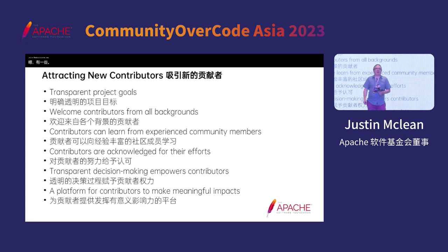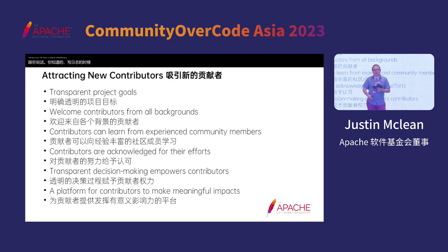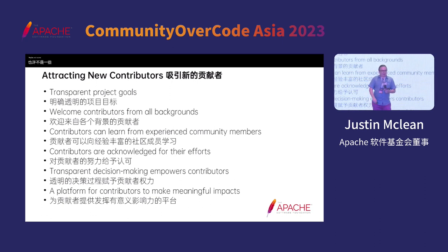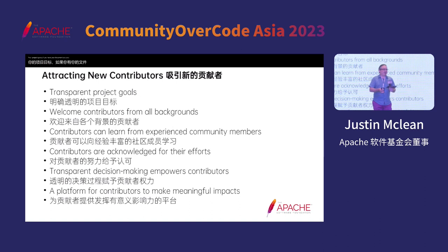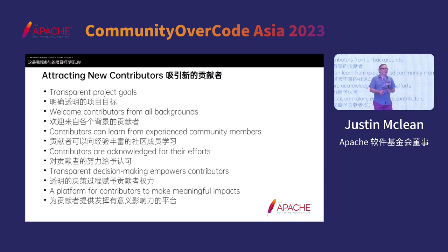There are some very obvious ways of attracting new contributions and committers — we're at one now. Coming to a conference, meeting people, talking, writing blog posts, having a website, social media — all those things will help. But one of the most important, and maybe less obvious ways, is actually documenting your project goals. If your project goals are clearly spelled out and someone can see those, they can immediately see whether this is the sort of project they want to be involved in — so you attract the right sort of person.